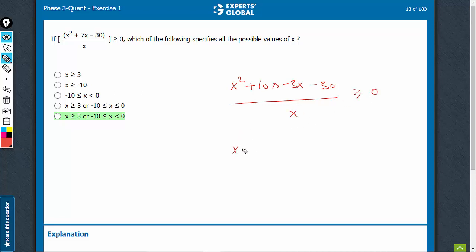So this factorizes into x plus 10 into x minus 3 upon x is greater than or equal to 0.